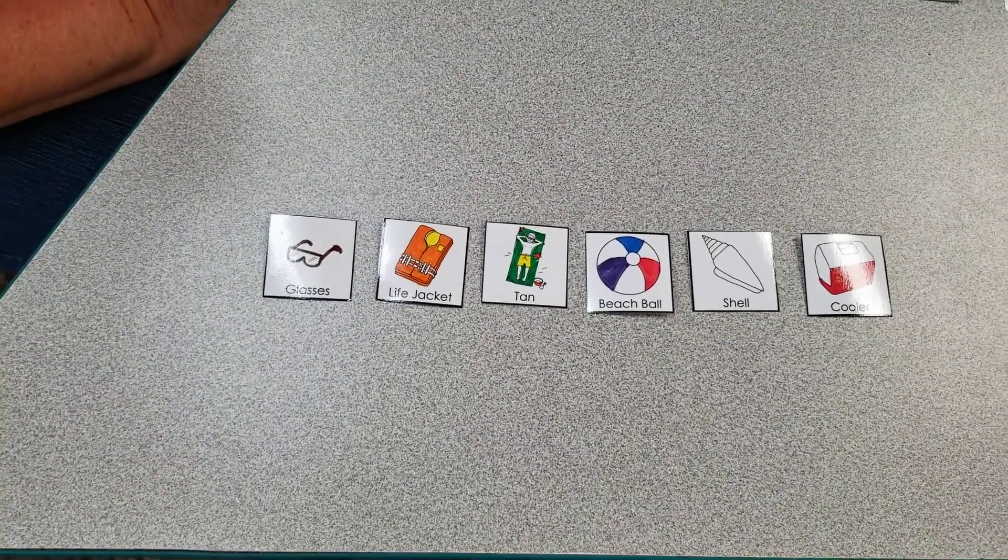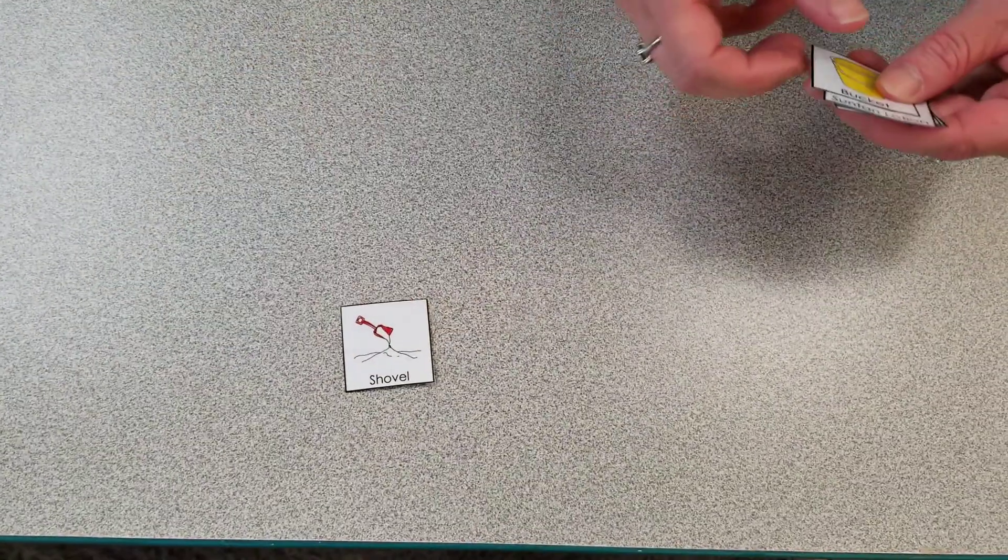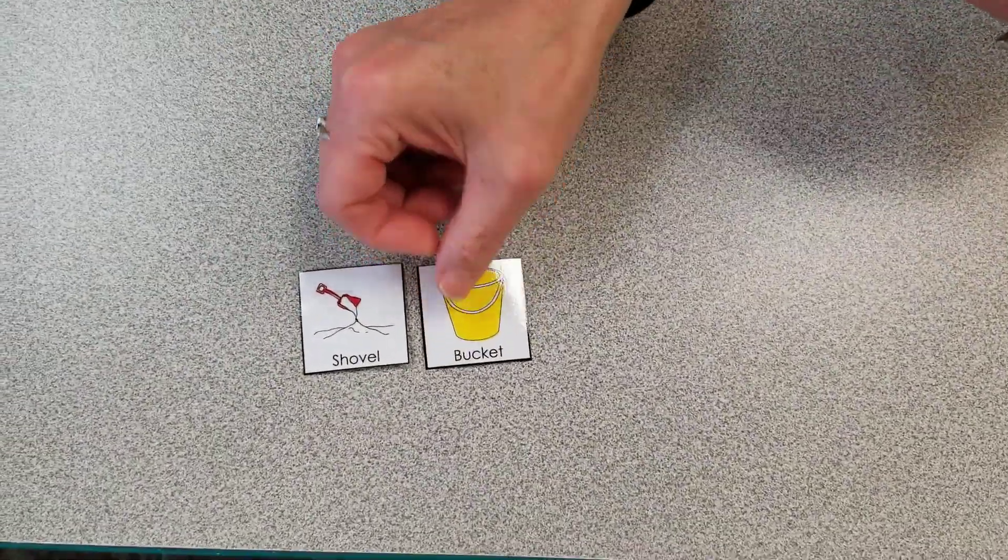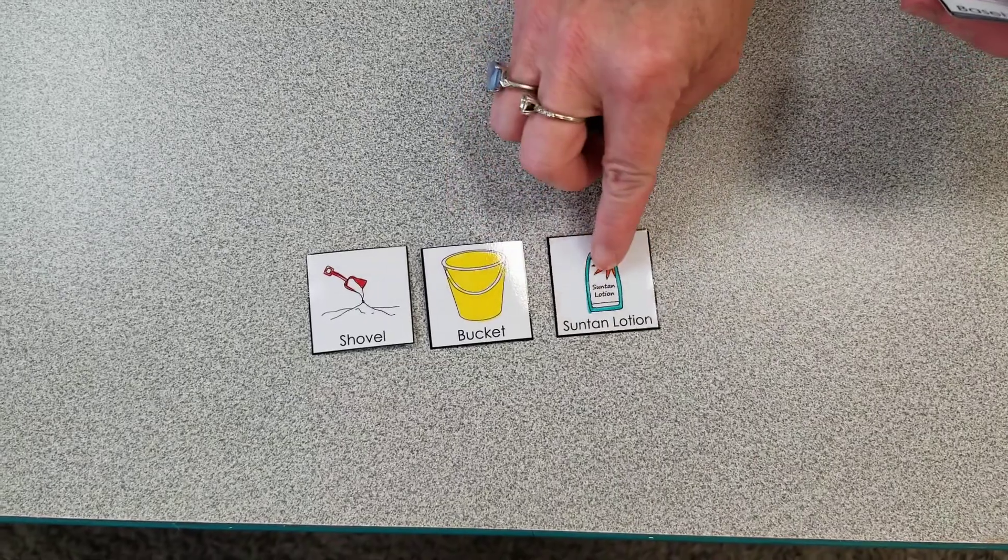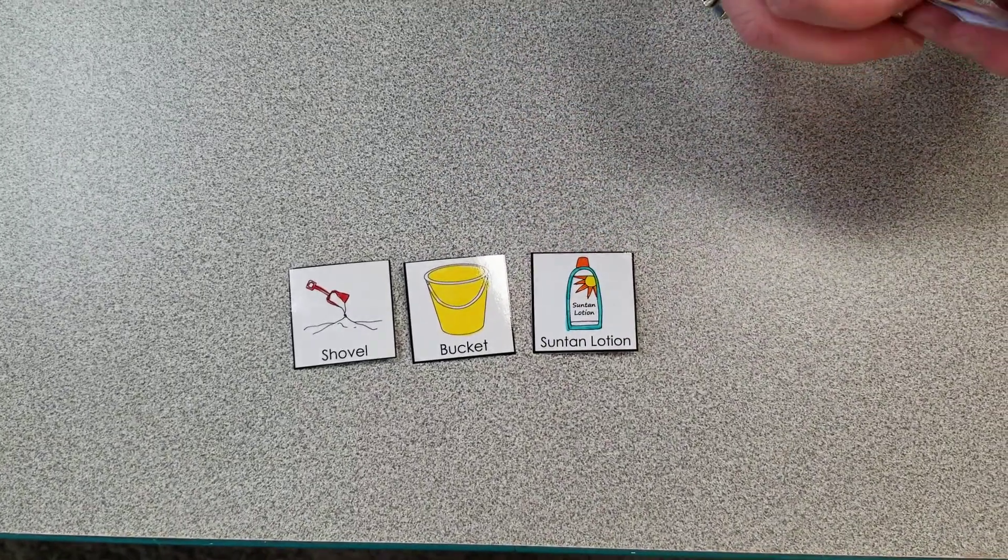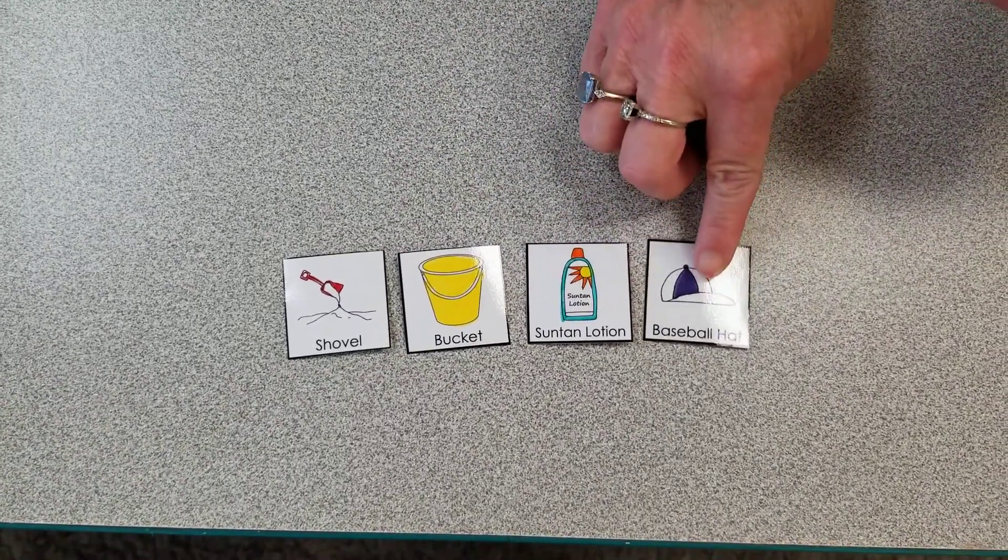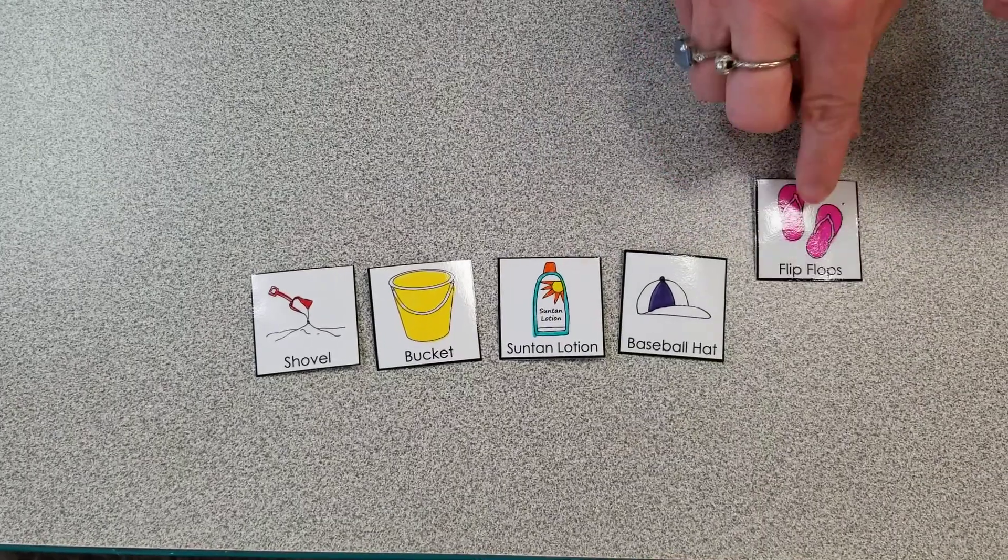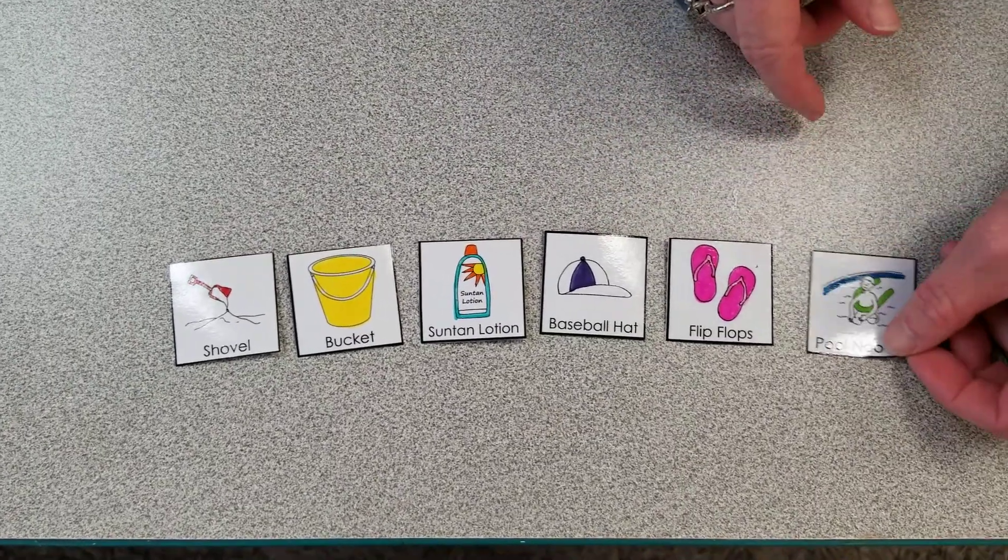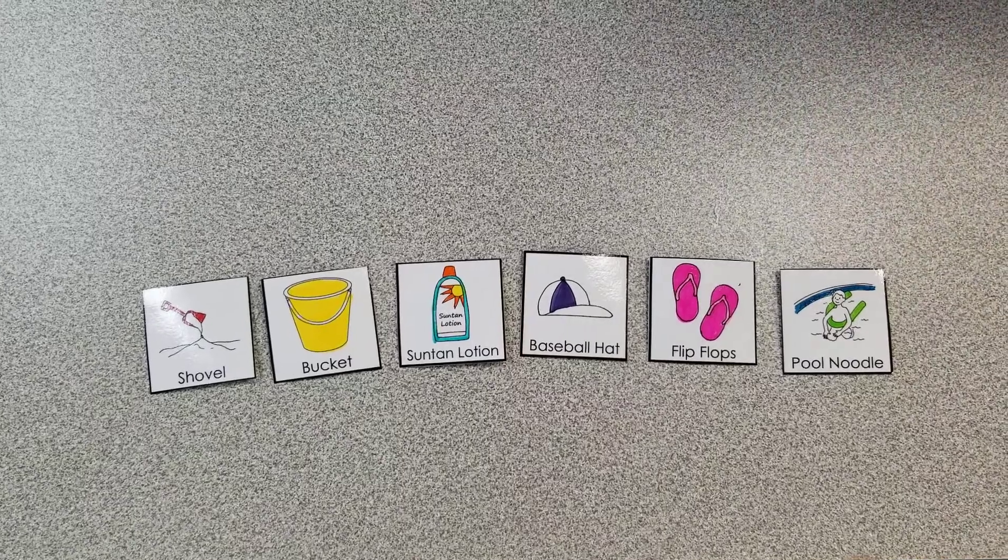All right, I have six more. I have a shovel for the sand, a bucket for the beach, don't forget your suntan lotion, it's a must, and a hat, you should put both on actually, some flip-flops, and a pool noodle. It does not always go to the beach, you might go to the pool.